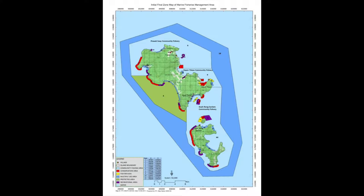The first one is up here, and then there's a boundary, and then you've got the second one here down to Cog, and then the third one in the south of the archipelago.